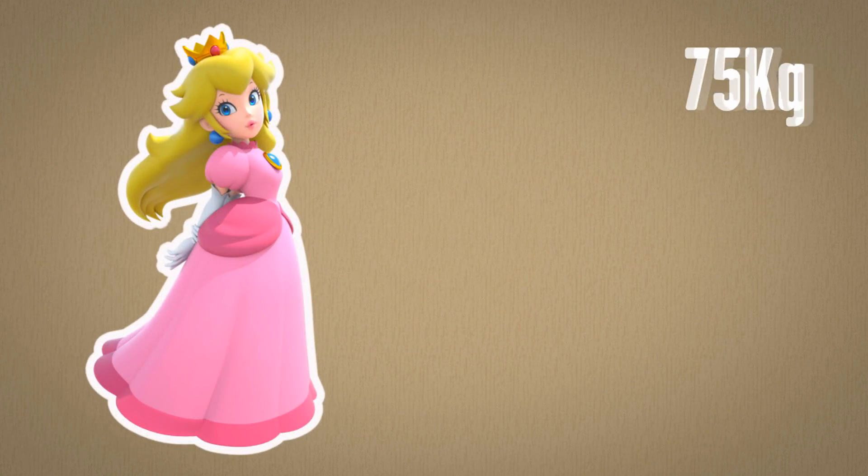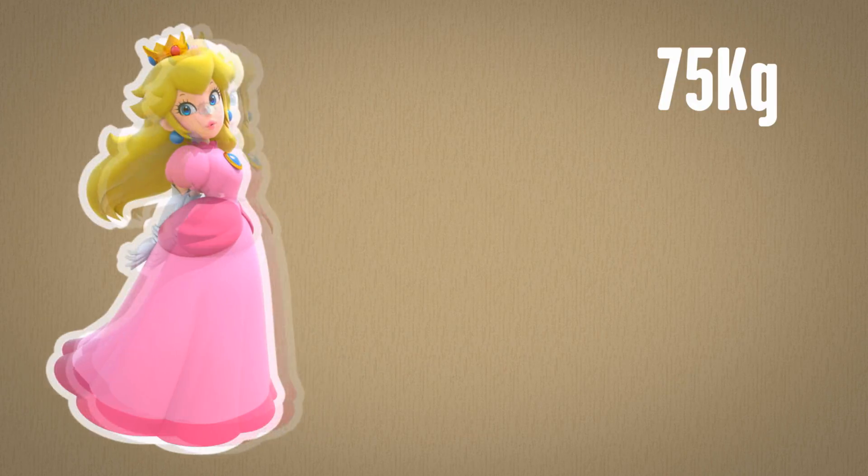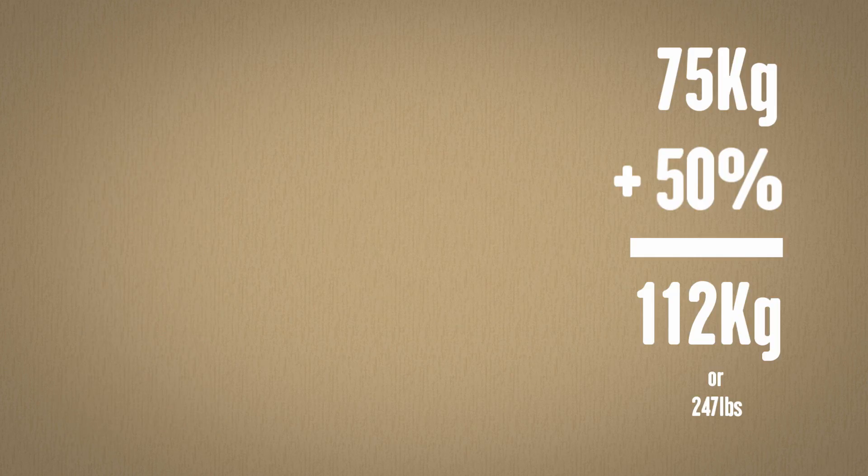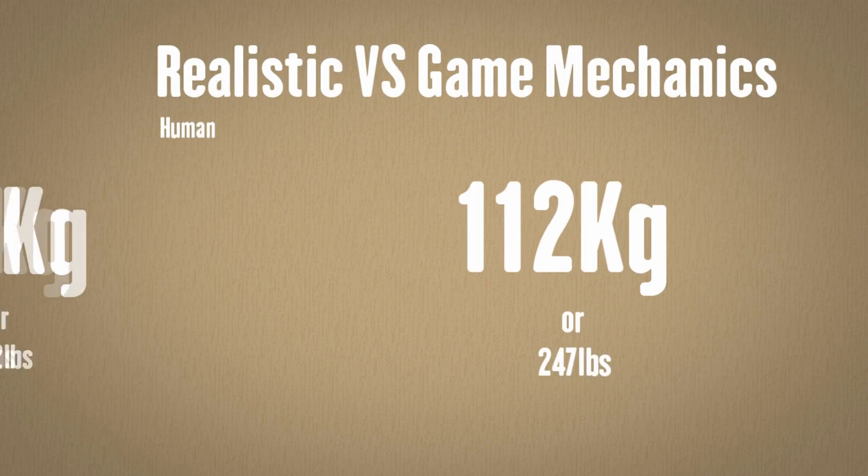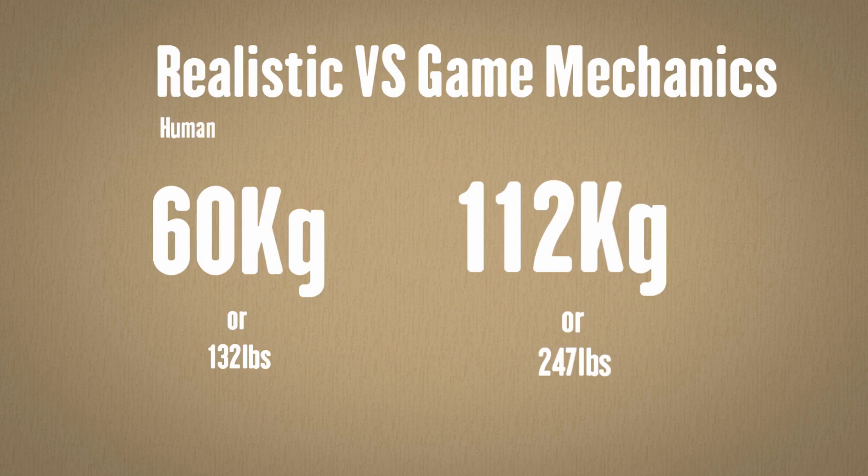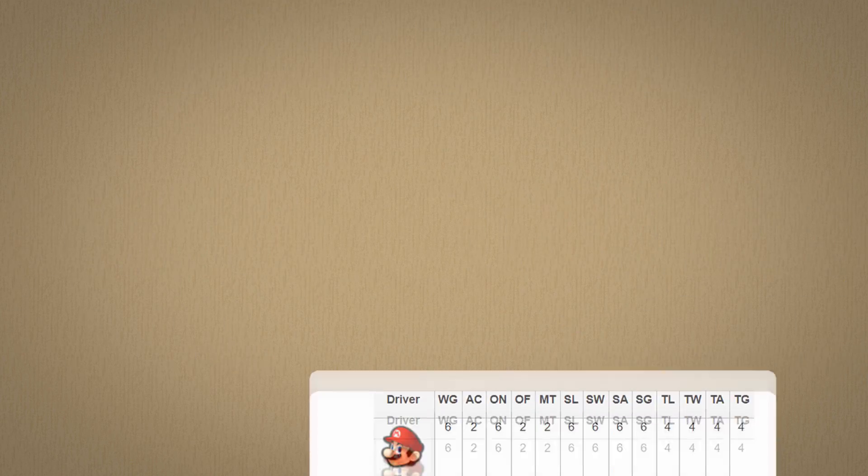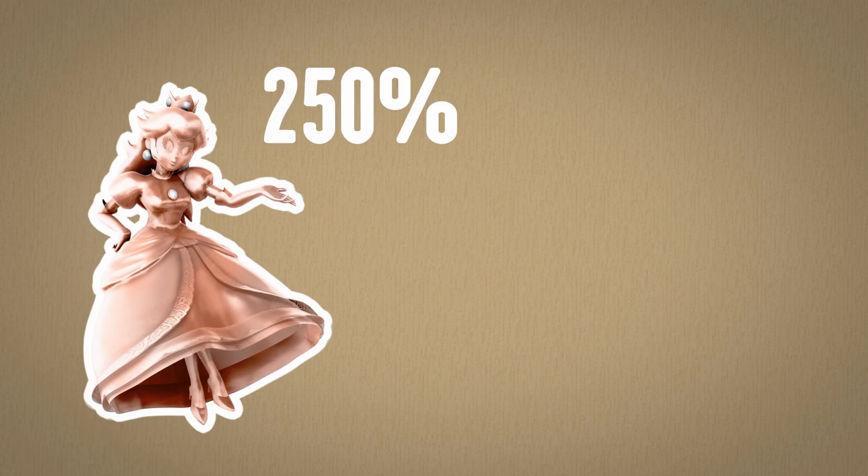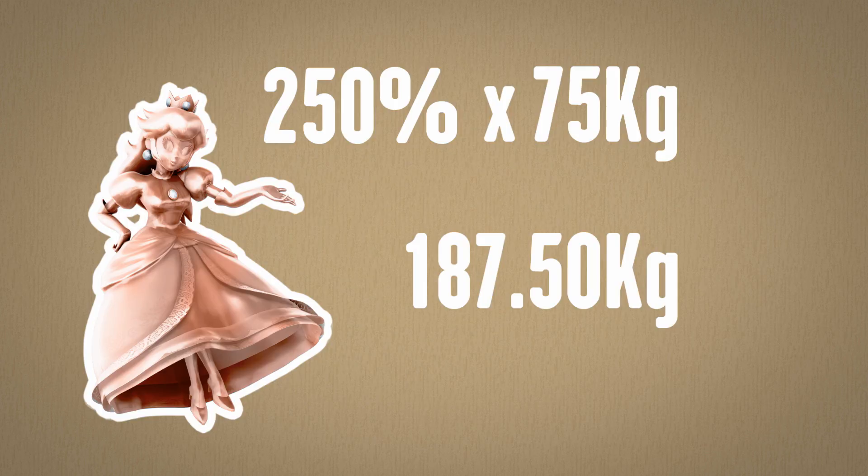Well, muscle is heavier than fat. If we use Peach as the base, as she appears to be a healthy human, a bit thin if anything, and Mario is 50% heavier than her, that would make Mario 112 kilograms. So let's work with both of these numbers, to get a more canon via game mechanics weight, and use 60 kilograms for the more realistic weight. Pink Gold Peach in Mario Kart 8 is a weight of 10 units, while Peach is 4. So that means there is a total of 250% in weight change. So Pink Gold Peach weighs 75 kilograms times 250%, 187.5 kilograms.